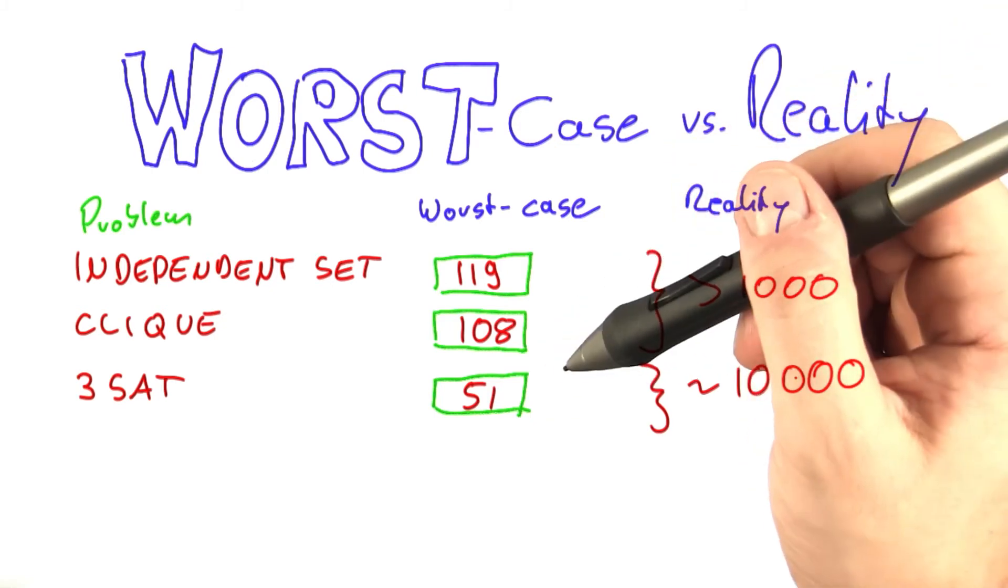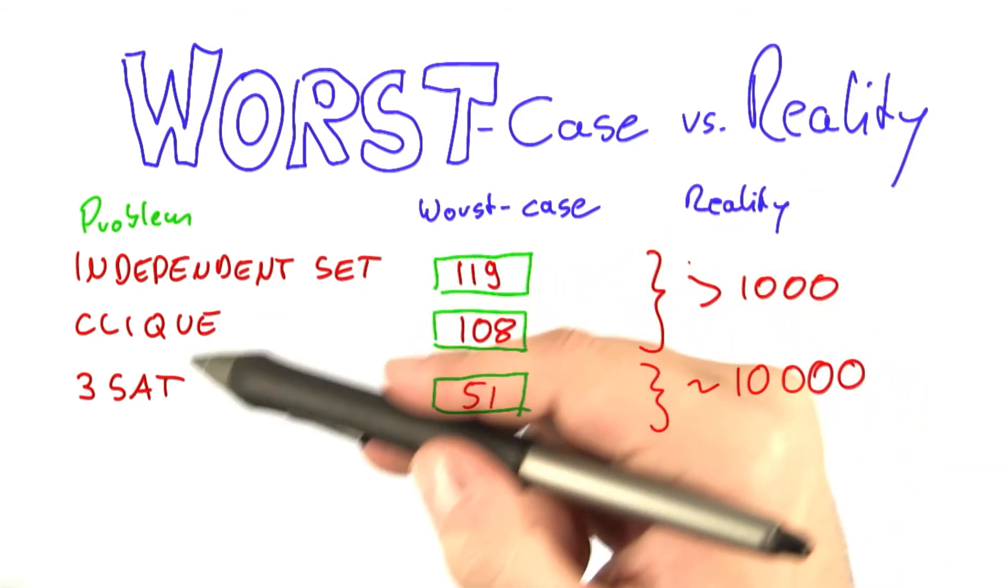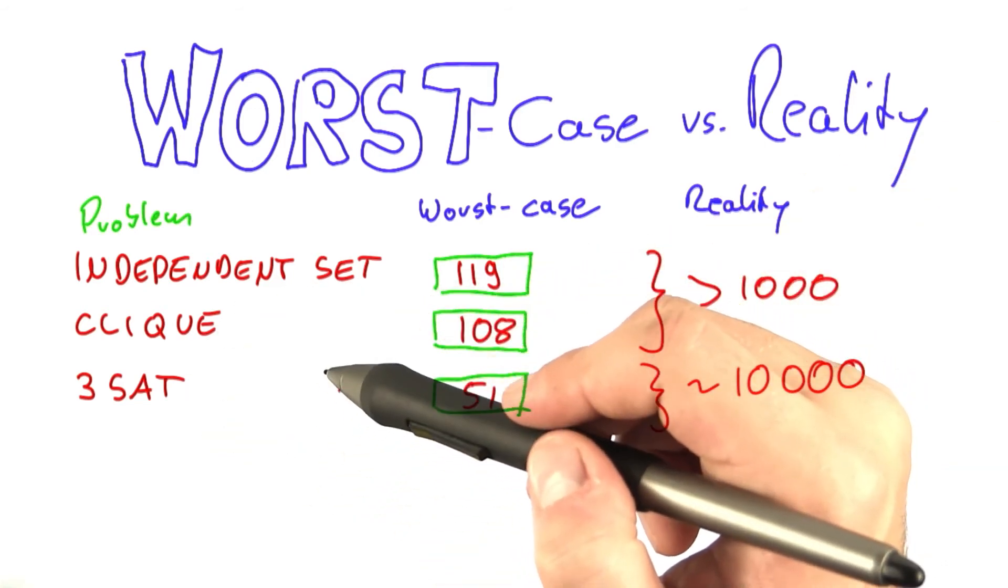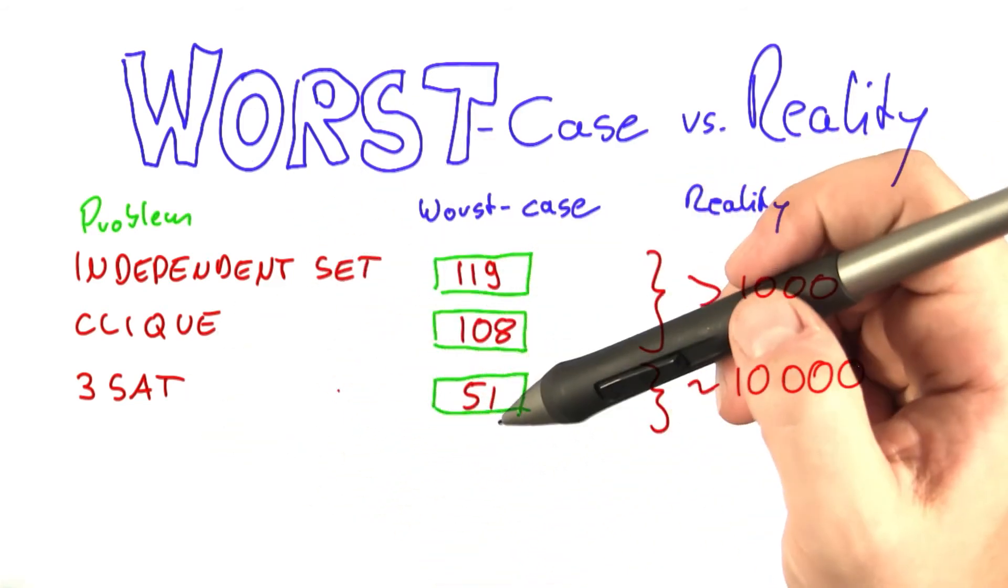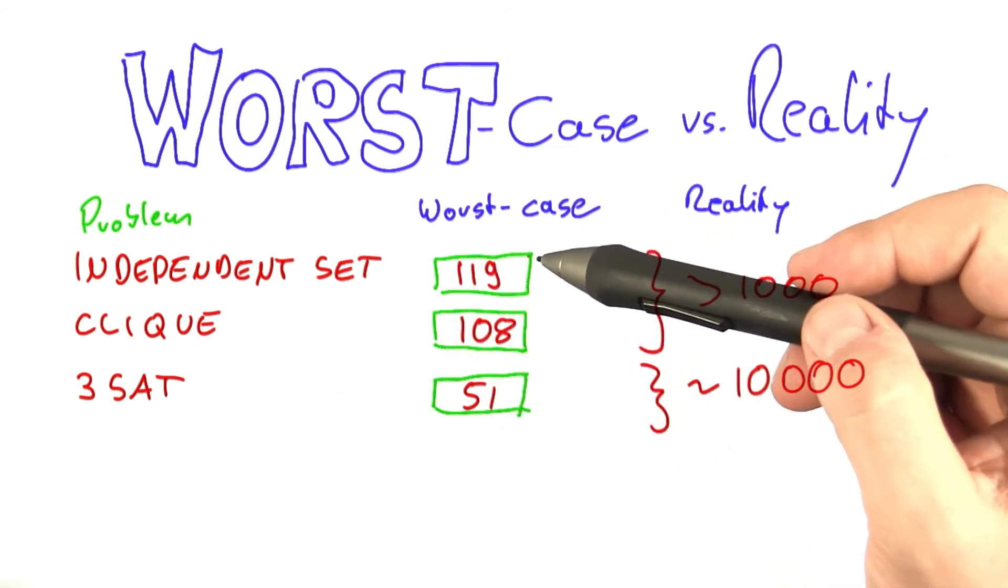And the reason for that is that it seems like most of the instances or inputs to NP-complete problems that we encounter in practice are in a way well behaved. They rarely tend to be worst-case instances that force our algorithms to run in their maximum time.